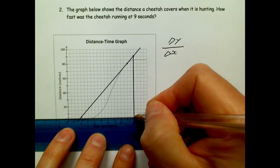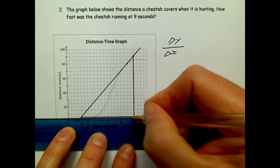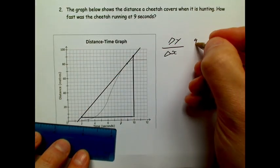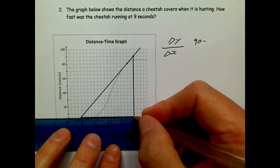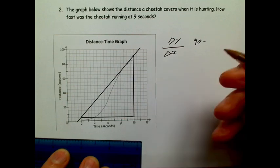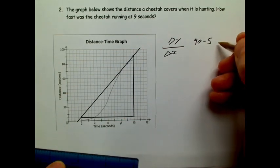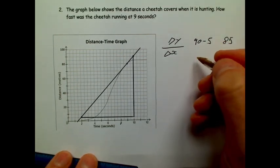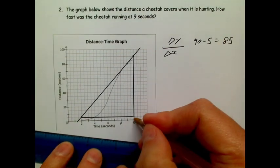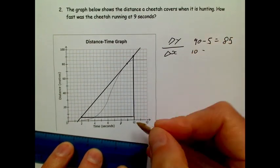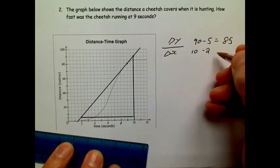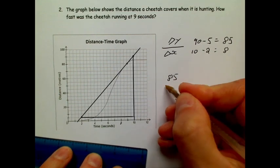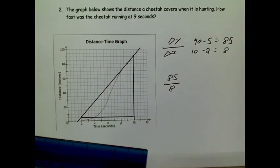So I need to work out my change in y, my rise, and divide that by my change in x between those two points. So I'm going to draw in my change in y and my change in x. So there's my change in y and there's my change in x. So let's start with the change in y. So this point is 90 and this point down here is—so if that's 20, that's 10, so that's 5. So 90 take away 5 is 85. And my change in x is—there's 10, and then at the lowest it is 2—10 take away 2, that is 8.